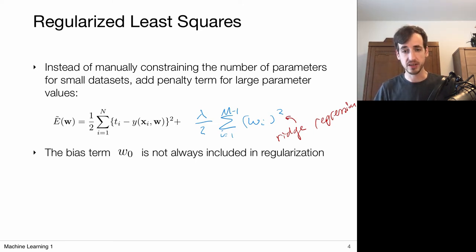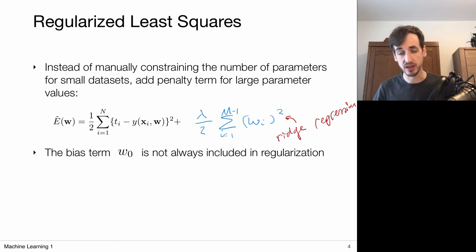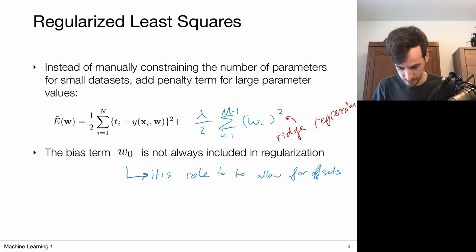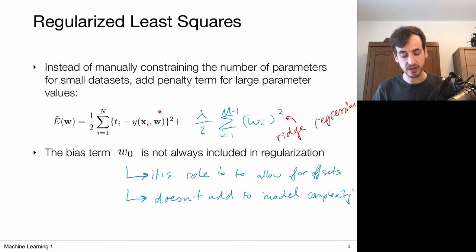In practice, the bias term is often not included in these regularization penalties, because the role of the bias is precisely to allow for shifts in my predictions. You want to have the option that the bias w₀ is different from zero. Another reason is that the bias term doesn't really add to model complexity — it's just a straight line. So the bias is not included in regularization because its role is to allow for offsets and it doesn't add to model complexity. We are minimizing a sum of squared errors and putting a quadratic penalty on the weights.